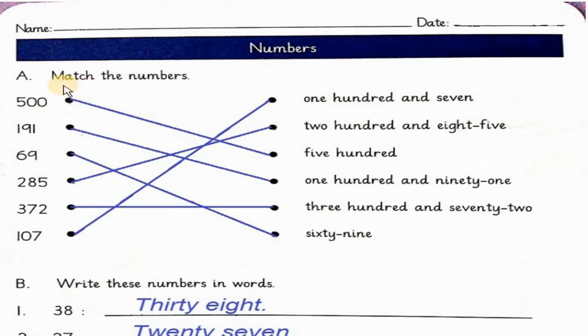Page 3, numbers. आपको digits में नंबर दिये गए हैं और उनको आपने यहां इन नंबर से मैच करना है जो words में दिये गए हैं. 500. Match 500 with 500. 191 और 191. Match these two. 69. 69. Match these two. 285. 285. Match these two. 372. 372. Match these two. 107. 107. Match these two.